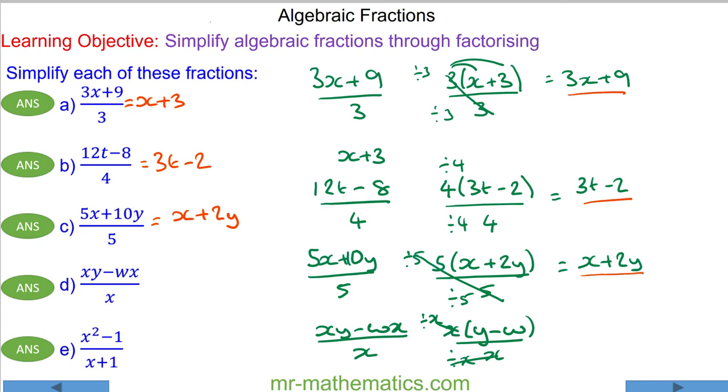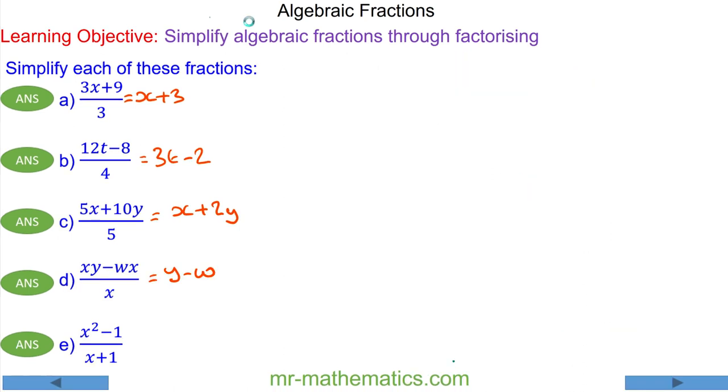And these will cancel, so we have y minus w. For question e we have x squared minus 1 over x plus 1. Now, because the numerator has an x squared term and this is a quadratic, I'm going to write it in general form: x squared plus zero x minus 1 over x plus 1, showing the missing x term.